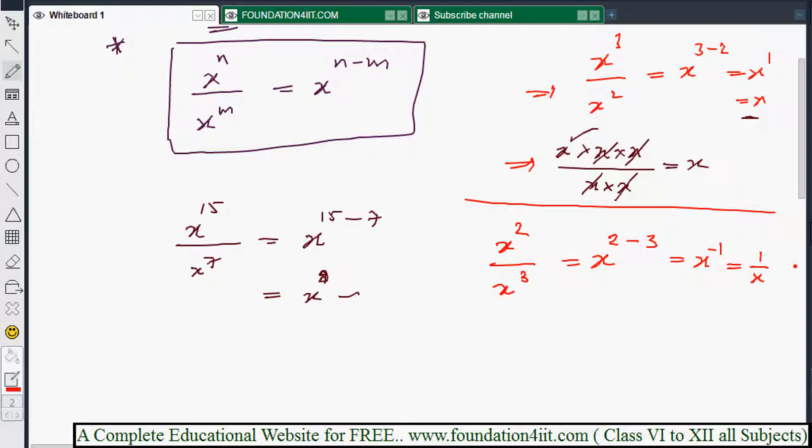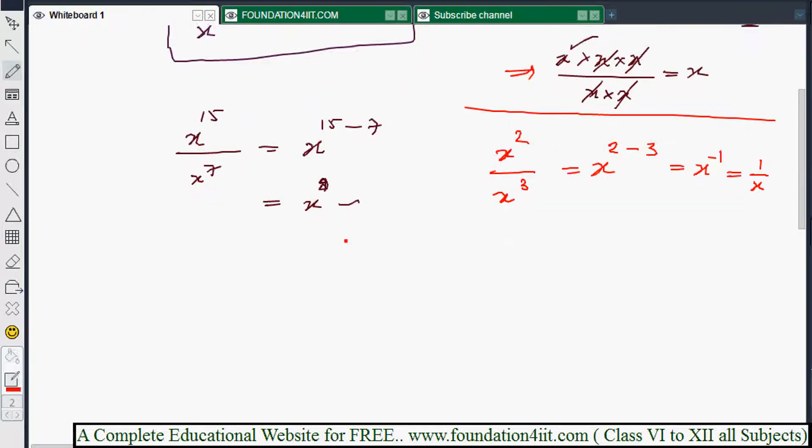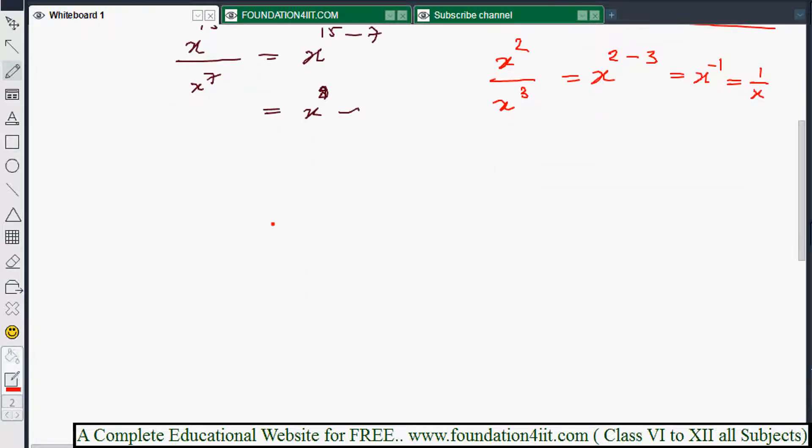If the base is, for example, minus x to the power 6 by minus x to the power 4, you can write minus x itself and 6 minus 4, so minus x to the power 2. Now if you open the bracket, minus x should multiply 2 times. Minus into minus is plus, x into x is x square, so x square is the answer.